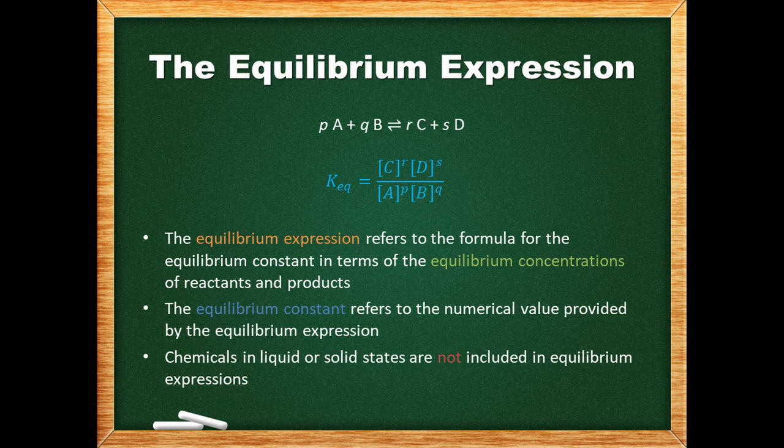This exclusion has to do with the fact that the concentration of a pure solid or liquid is fixed by its density, while the concentration of a solute is not. One exception is if we have more than one liquid in the chemical equation — the liquids dilute each other, so in this case the liquids are included in the equilibrium expression. Adding or removing solids or liquids or changing the surface area of solids may affect the reaction rate but will have no effect on the equilibrium concentrations.